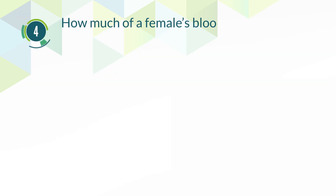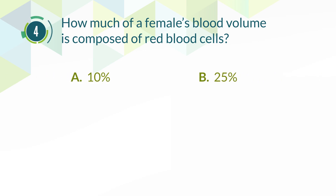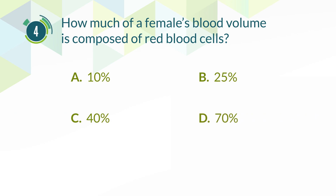Number 4. How much of a female's blood volume is composed of red blood cells? A. Ten percent. B. Twenty-five percent. C. Forty percent. D. Seventy percent.